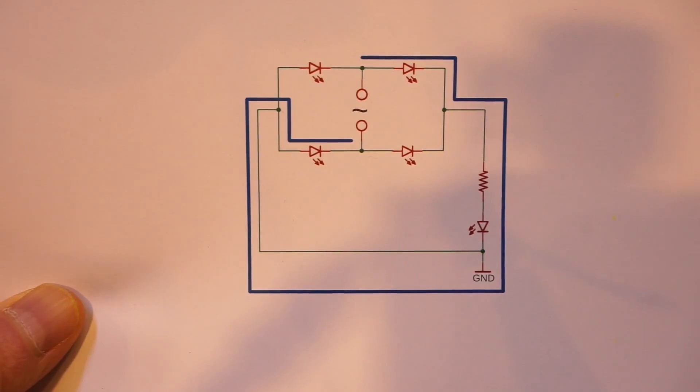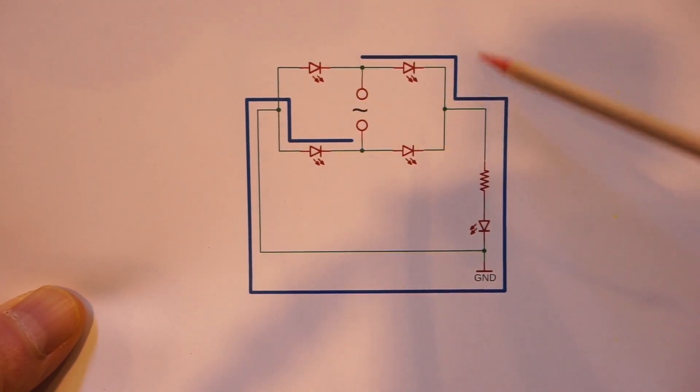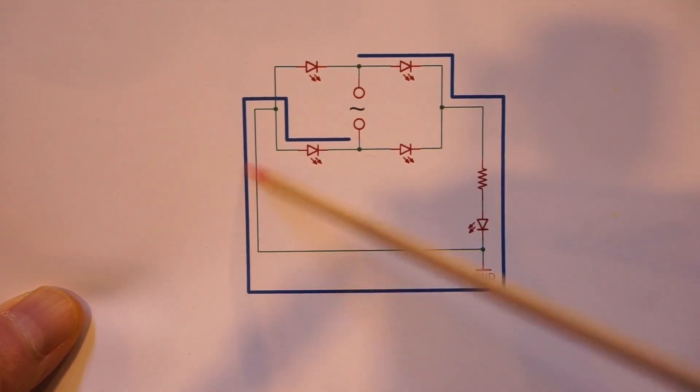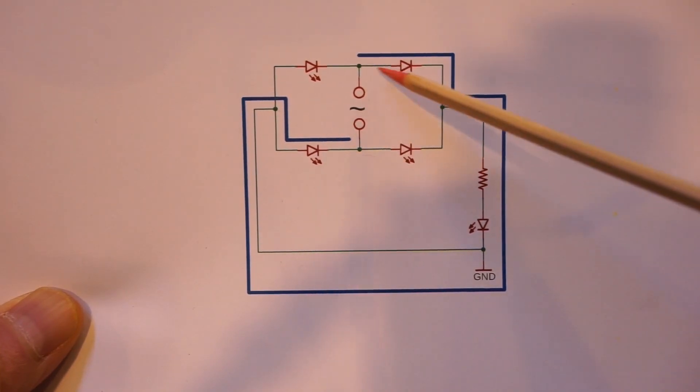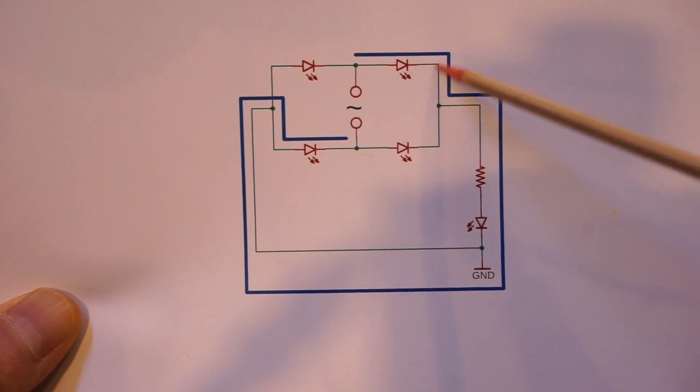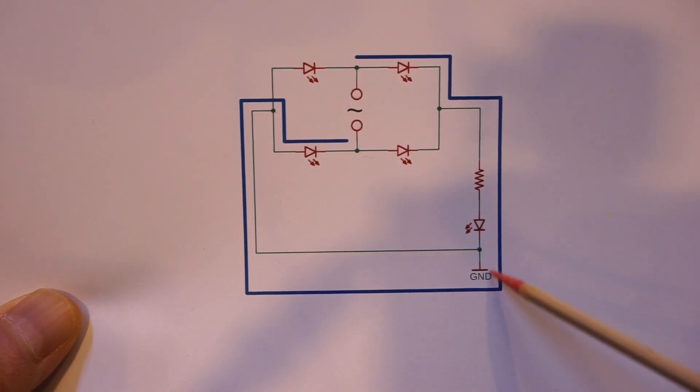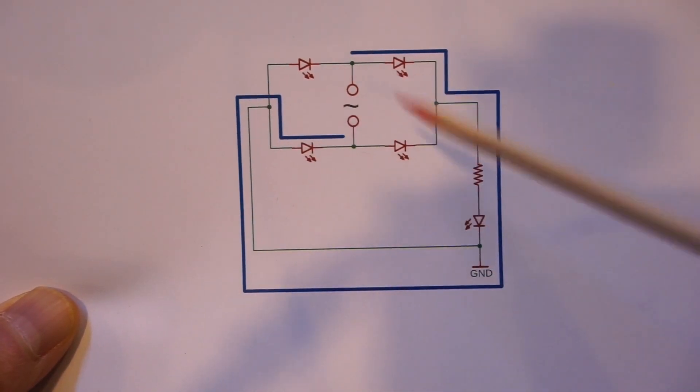So here is the circuit diagram and I drew a thick line here to illustrate the current flow during the positive cycle. As you can see that these two LEDs are essentially conductive and of course the current flows through the load this way.